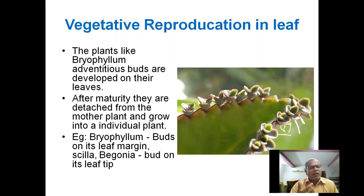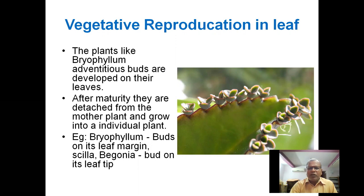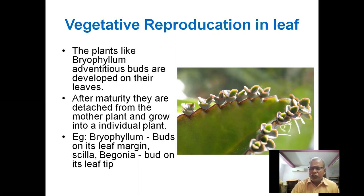In plants like Bryophyllum, adventitious buds are developed on their leaves, especially at the leaf margin. After maturity, these buds are detached from the mother plant and develop into a new plant. So, the leaf also helps in vegetative propagation.